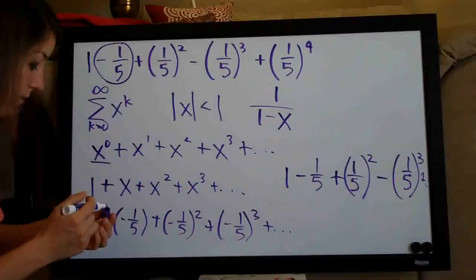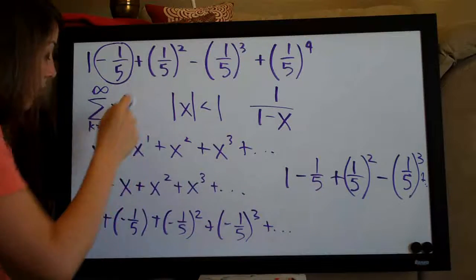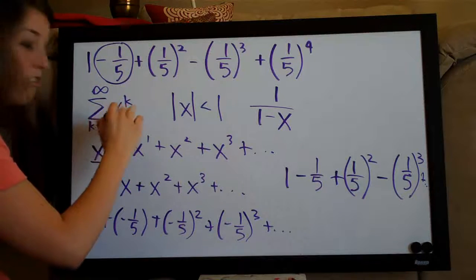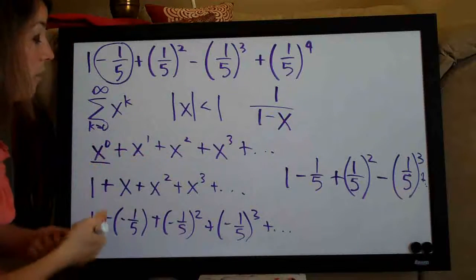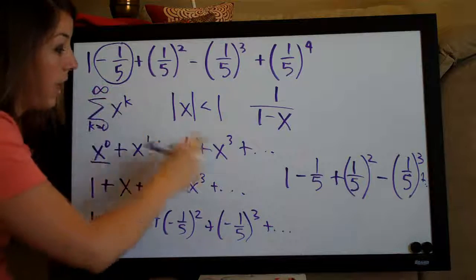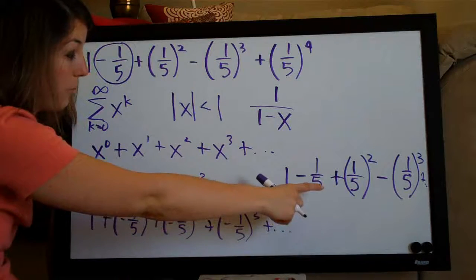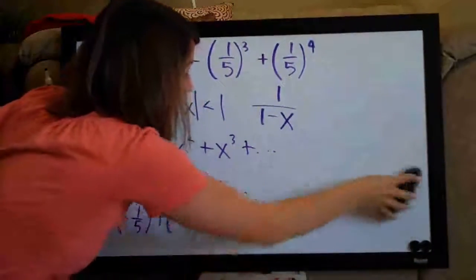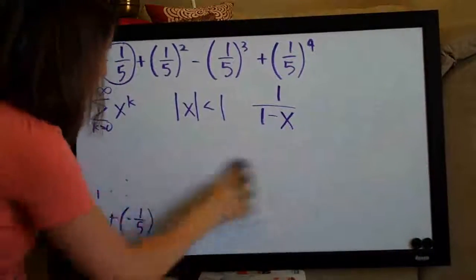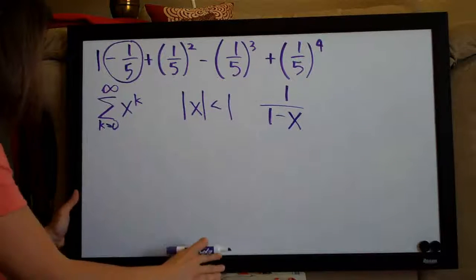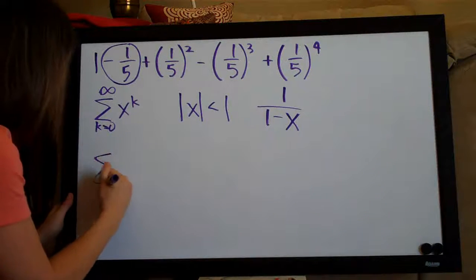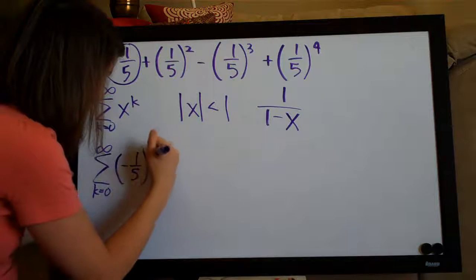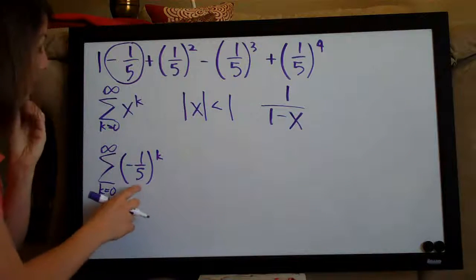Our series is matching up, which means it does take this form — this representation does represent our series. Since we guessed x was negative one-fifth and proved that correct, we know x equals negative one-fifth. So we can write our series in compact form as the sum from k equals zero to infinity of negative one-fifth to the k.